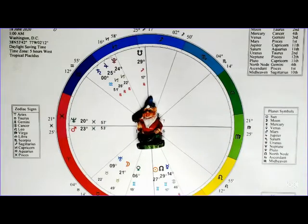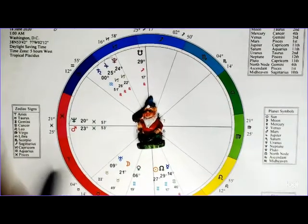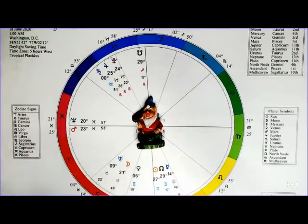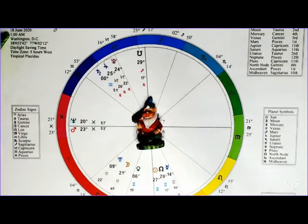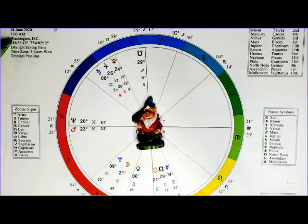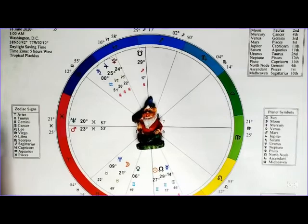Okay, this is the chart for the date that Mercury stations retrograde. This will occur on June 18th at 1 a.m. in Washington, D.C.